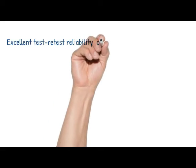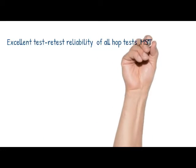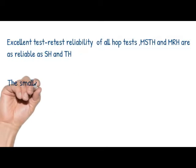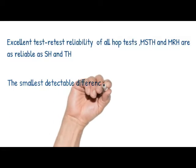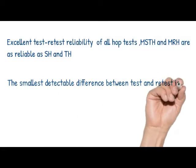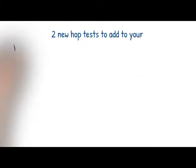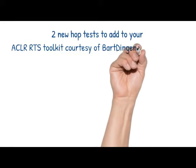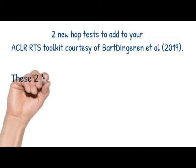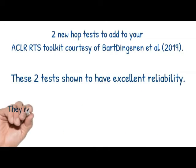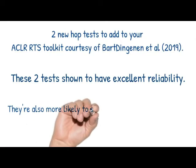The authors concluded that there was excellent test-retest reliability of all hop tests. The medial side triple hop and the medial rotation tests were as reliable as the single leg hop and the triple hop test. The smallest detectable difference between test and retest is approximately 10% of the jump test. So you now have two new hop tests to add to your ACL return-to-sport toolkit.